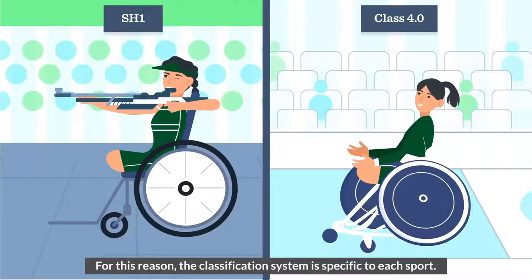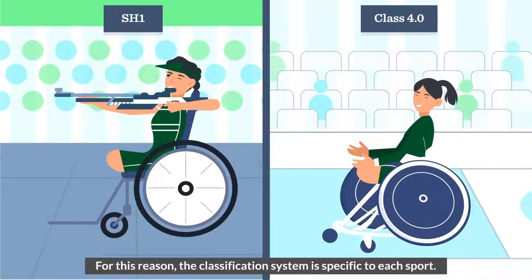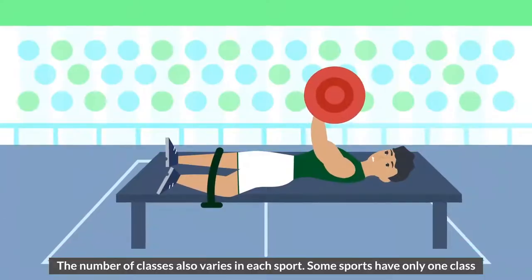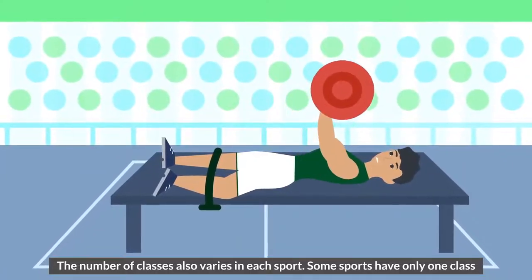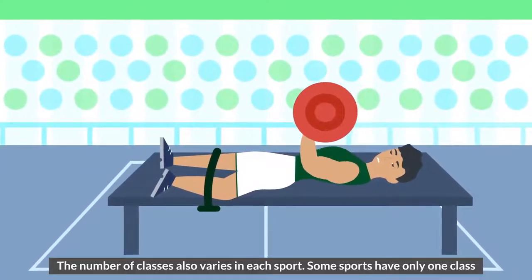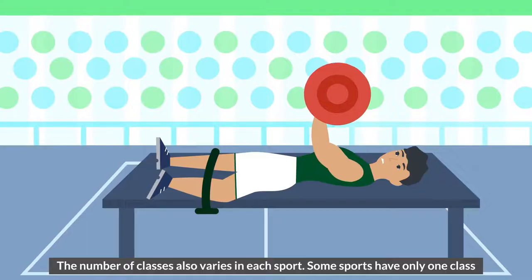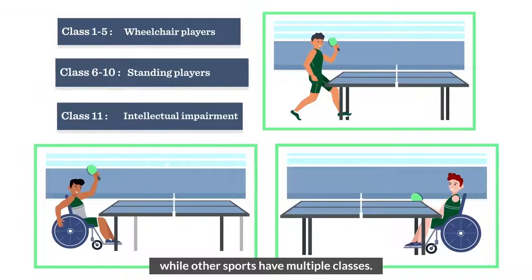For this reason, the classification system is specific to each sport. The number of classes also varies in each sport — some sports have only one class, while other sports have multiple classes.